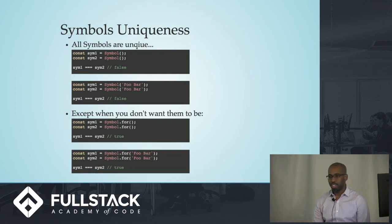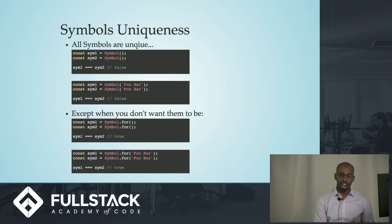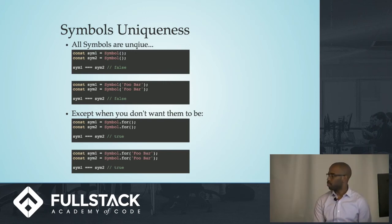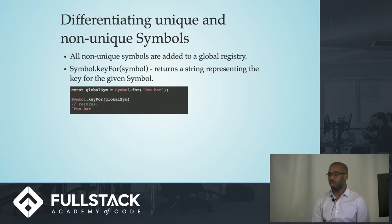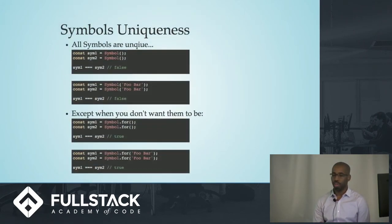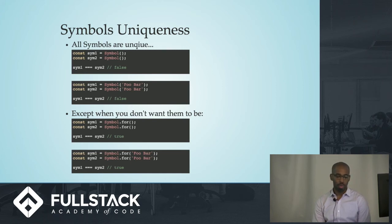Except when you don't want them to be. You can actually create symbols that are not unique using the symbol.for method, and it will create a symbol that is added to a global symbol registry. So if you create two symbols using symbol.for with the exact same optional string, they will be equal to each other.